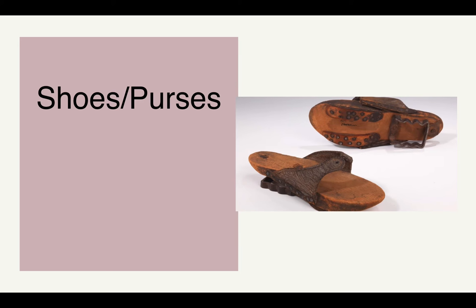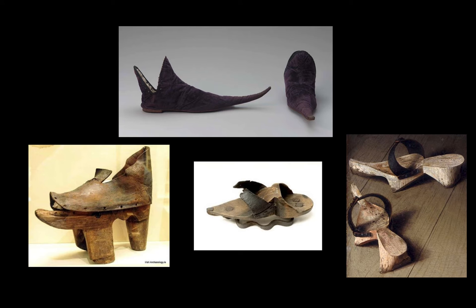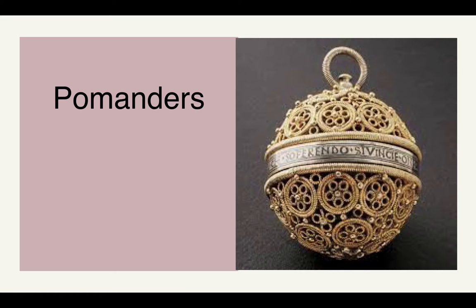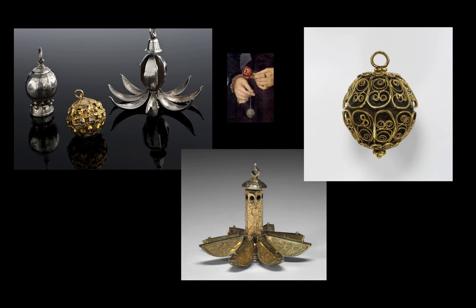For shoes and purses, we still see the pointed poulain, but a new shoe is introduced called the patten or galosh — typically a wooden sandal slipped over the poulain to protect it in bad weather. Men would carry purses on their belts occasionally, heavily decorated depending on the affluence of the wearer. No pockets yet. Pomanders are small balls of filigree containing a sponge soaked in perfume that hung from the belt, serving the function of making you smell better when you walked by people.